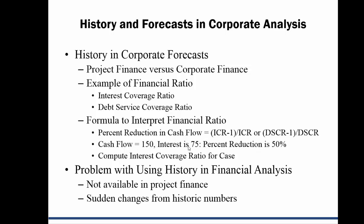If the cash flow is 50 and the interest is 75, then we can say we got a two times interest coverage. Our cash flow can go down by 75 — take that 75 divided by 150 — and that's the formula I insist on.